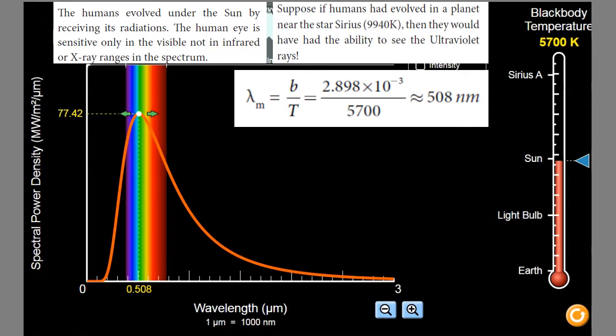What is the formula? That calculation is also shown in the board calculation. Lambda M is equal to B by T. Lambda M is nothing but wavelength at which maximum intensity is emitted. Which wavelength is emitted with greater intensity? Lambda M is equal to B by T. What is B? Wien's constant divided by surface temperature of the sun.